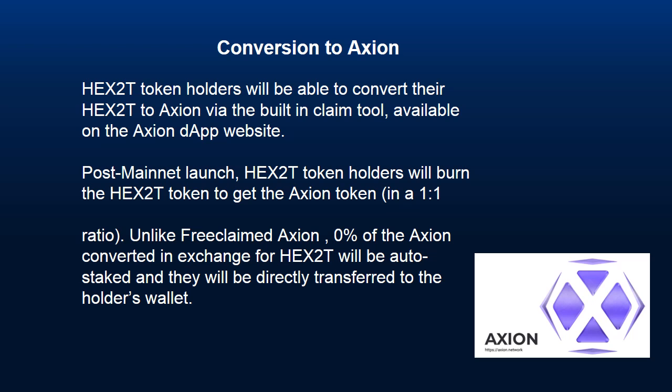HEX 2T token holders will be able to convert their HEX 2T to Axion via the built-in claim tool, available on the Axion DApp website. Post mainnet launch, HEX 2T token holders will burn the HEX 2T token to get the Axion token in a 1-to-1 ratio. Unlike free claimed Axion, 0% of the Axion converted in exchange for HEX 2T will be auto-staked, and they will be directly transferred to the holder's wallet.